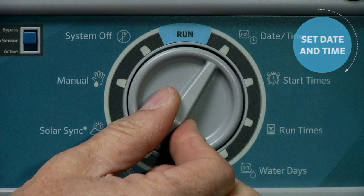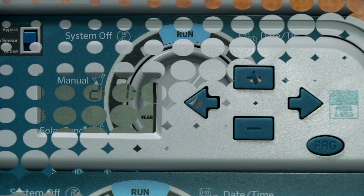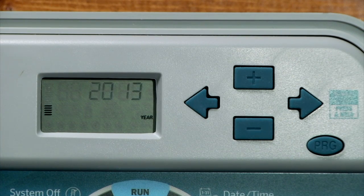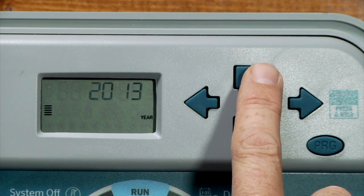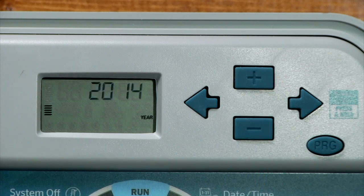Turn the dial to the date and time position. The year will be flashing, meaning that it's ready to be changed using the plus or minus. We'll select plus to go to 2014.